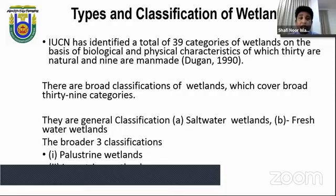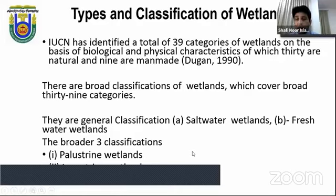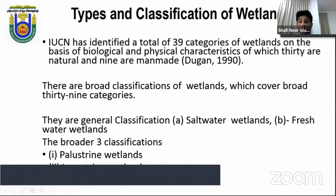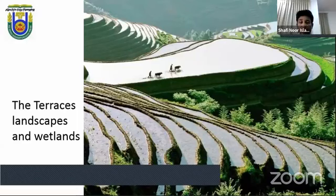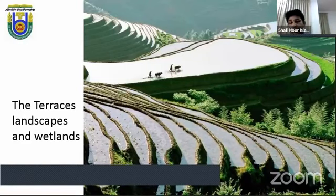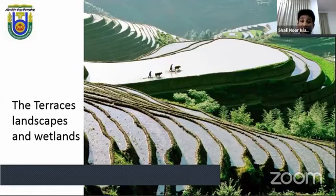IUCN has defined a total of 39 categories of wetlands based on biological and physical characteristics, of which 30 are natural and nine are human-made. A broader classification divides them into saltwater wetlands and freshwater wetlands. There are also peatland wetlands with various subcategories. Wetlands are not only found on flat plains or delta areas; terraced landscape wetlands are also visible in mountainous countries such as Indonesia, Malaysia, Thailand and Vietnam, where terraced wetlands are used for paddy cultivation.